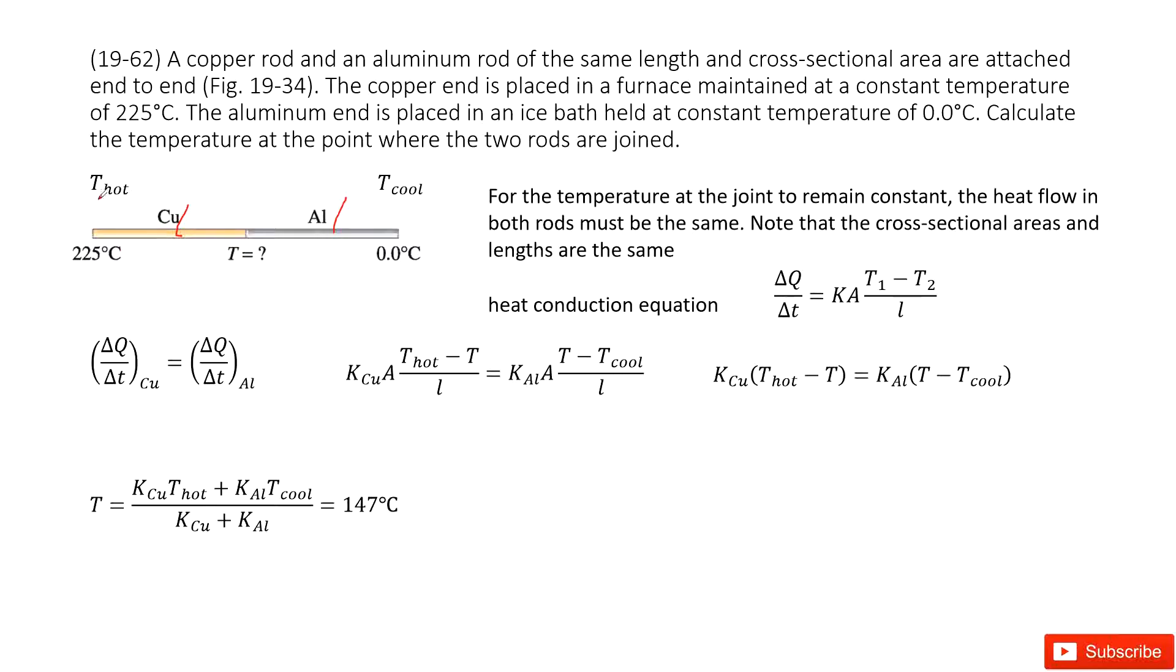At this end, we call it the hot end. The temperature T hot is 225 centigrade. And then at this end, we call it the cool end, so its temperature is 0 centigrade. We need to find the temperature at the point where the two rods are attached. So this is the middle point.